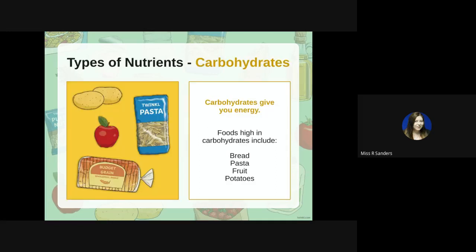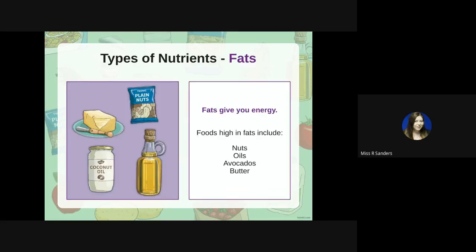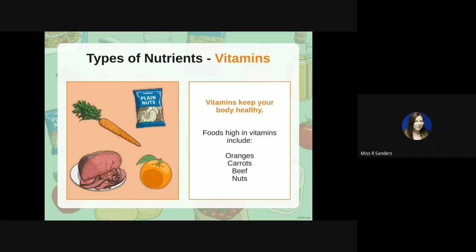Carbohydrates, as mentioned earlier, give us energy — these include bread, pasta, fruit, and potatoes. Fats also give us energy, however we shouldn't have lots of them. Nuts, oils, avocados, and butter all give you energy but have a high fat content. Vitamins help keep your body healthy — they include oranges, carrots, and beef and nuts. Notice there's a lot of crossover between the categories, because one piece of food can contain many different nutrients.